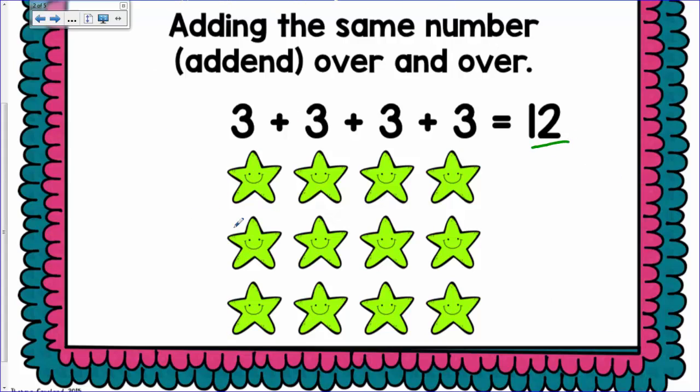You can write this by grouping them into columns, just drawing a line in between them. You have four groups of three. So you would write this as 3 plus 3 plus 3 plus 3 equals 12.